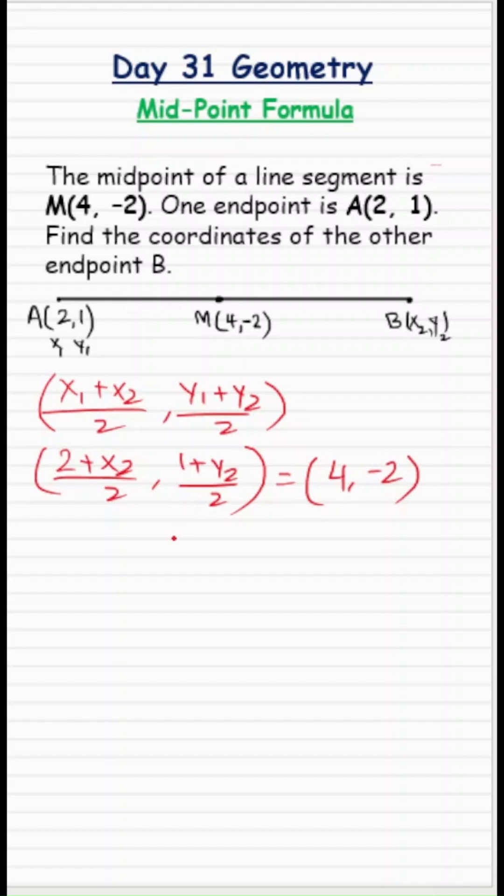So let's equate both the x and y coordinates to find the missing values. So (2 + x2)/2 equals 4 and (1 + y2)/2 equals -2.